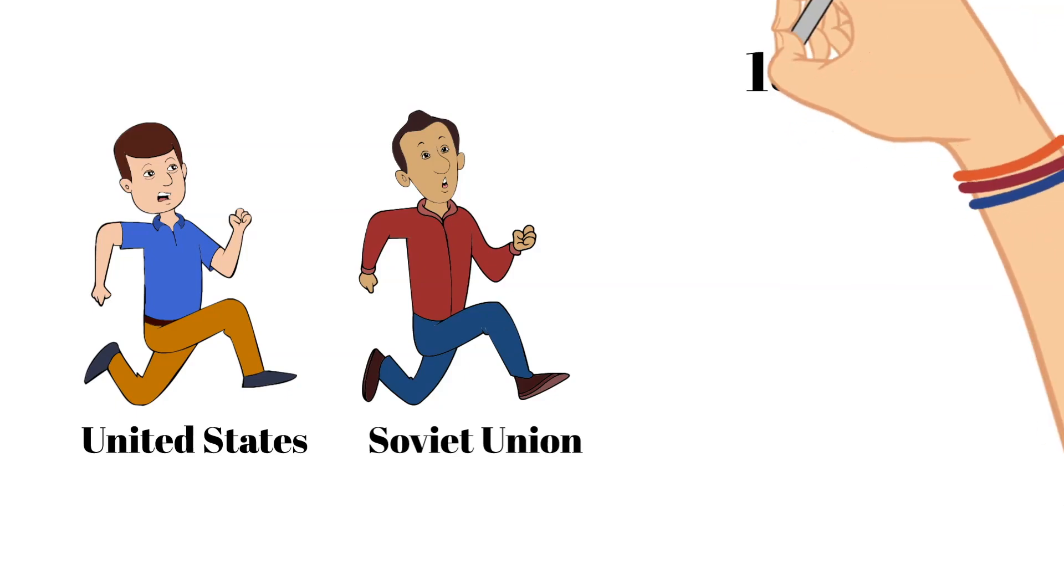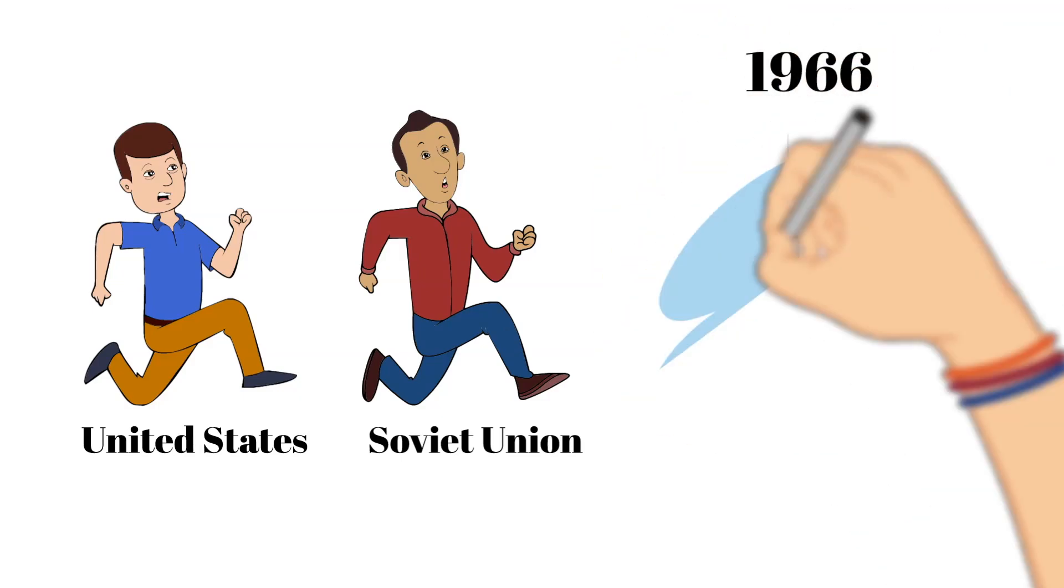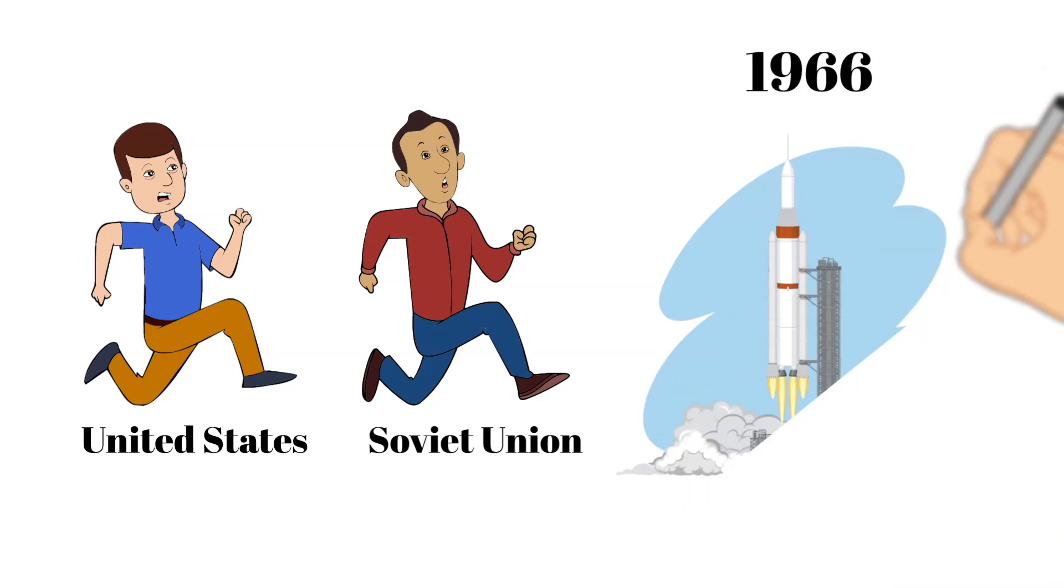Five years later, in 1966, NASA conducted the first unmanned Apollo mission to test the vehicle that would bring man to the moon.